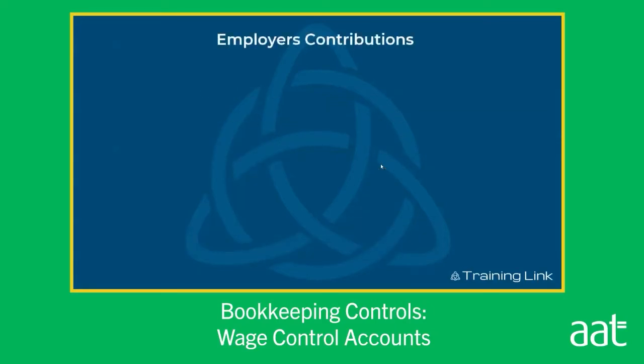So employer's contributions. In this example, the employer's national insurance contribution is £3,300. They also make a pension contribution for their employees of £3,750. Total of other employer's contributions: £7,050. We're just bringing that information together. We haven't started making the entries yet — I just wanted to introduce the costs that are associated with payroll.